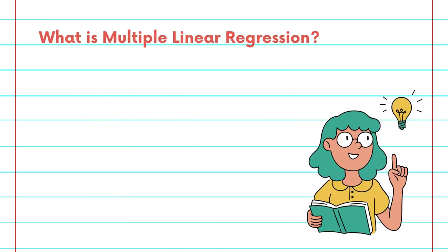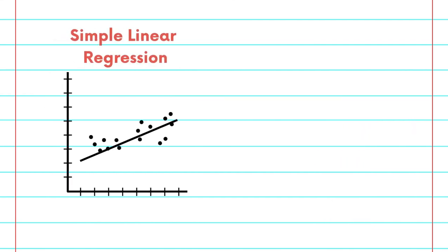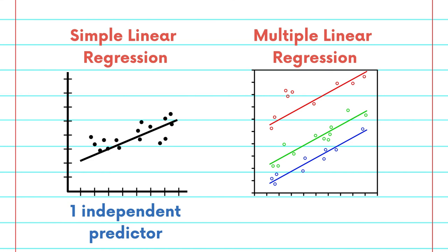Multiple linear regression is an extension of the simple linear regression. In simple linear regression we will only have one predictor, while in multiple linear regression we will have multiple independent predictors.